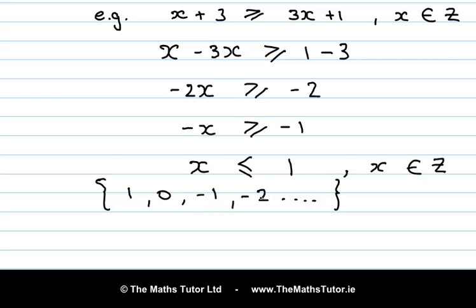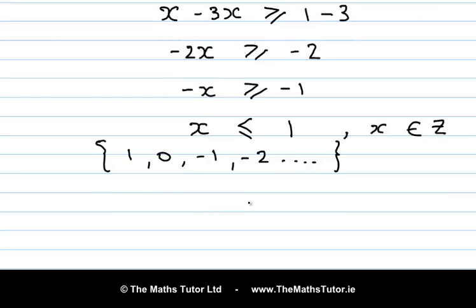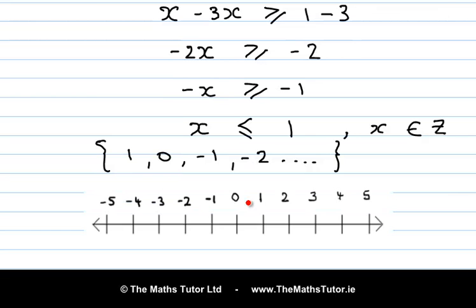Let's have a look at that on the number line. x is less than or equal to 1 and it's an integer, so positive and negative whole numbers. So we mark 1, 0, minus 1, minus 2, minus 3 and so on, all the way to minus infinity.